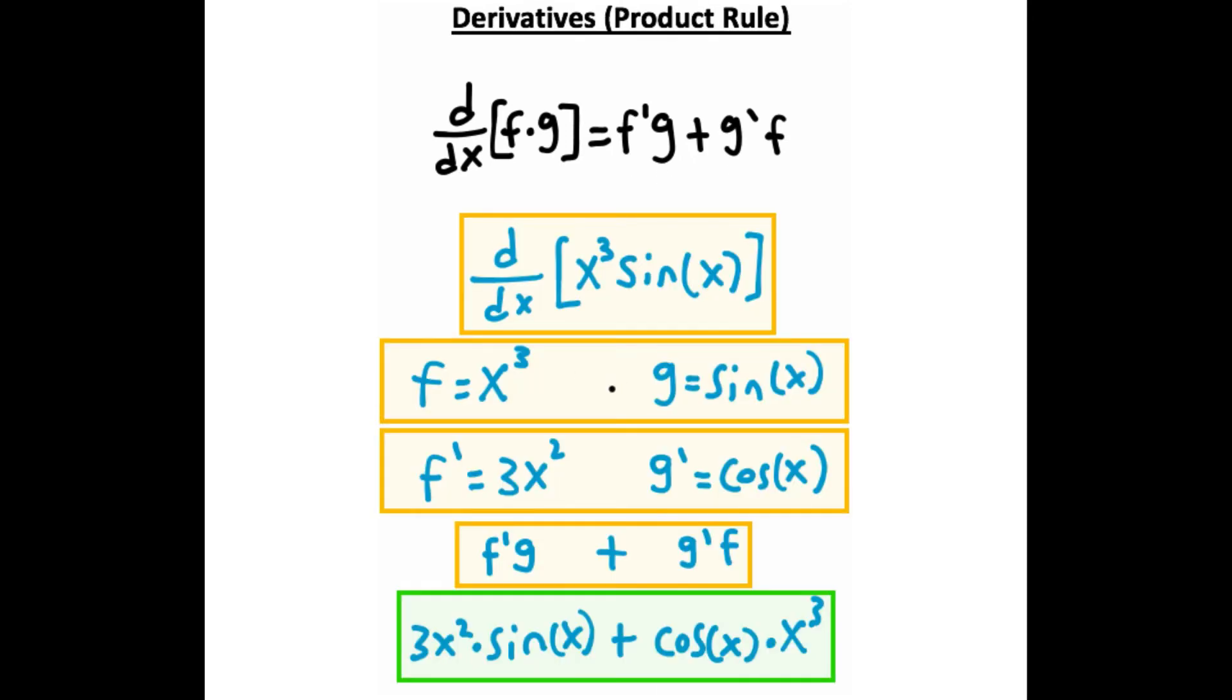Notice here that this g term was the sine of x. We assigned this to be g. We assigned this to be f, but notice that the derivative of g is cosine of x. That's something that you're just going to have to know. If you take these derivatives, you plug it back into this expression, you'll get this final expression down here.